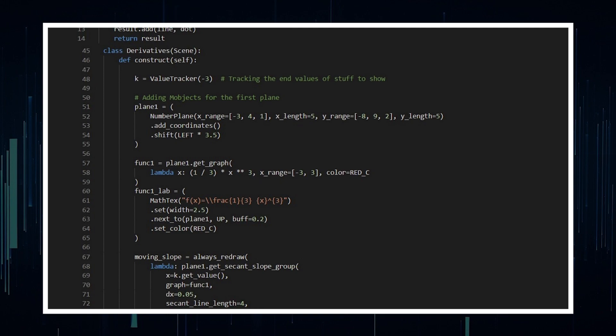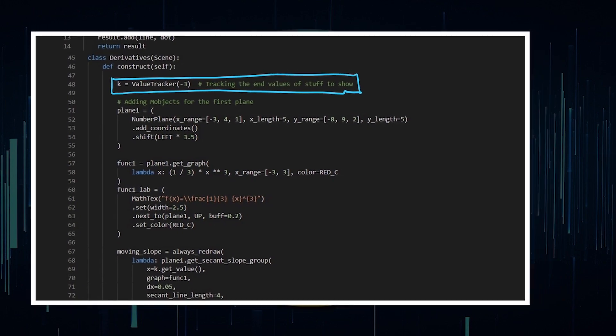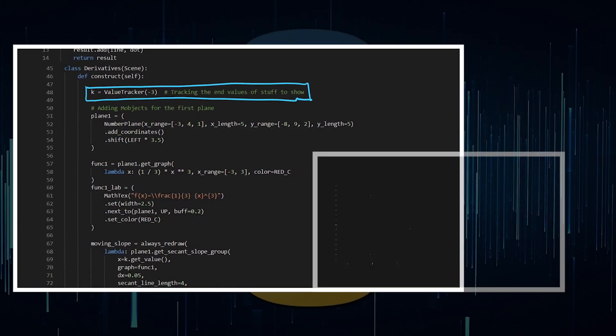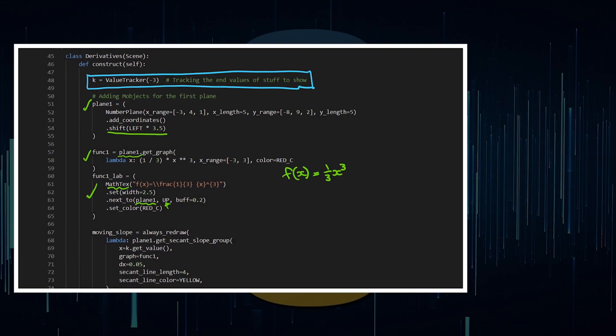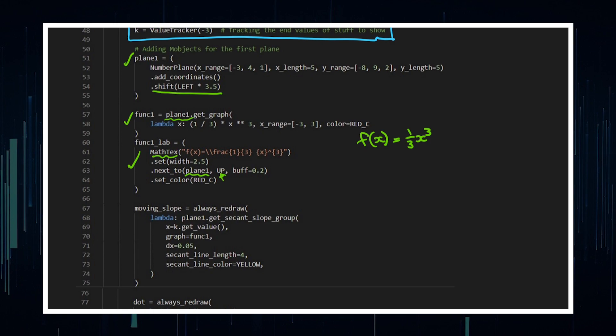Moving on to the code itself, most of this is going to be built on a value tracker. There are two planes and stuff on each plane that are built within this scene. So I add my first plane, which is a number plane, and I shift it to the left. I add my function on my plane one, which is F of X, a third X cubed. I give it a label using this math text, put it next to the plane and up from it. Then I'm going to be adding a moving slope.